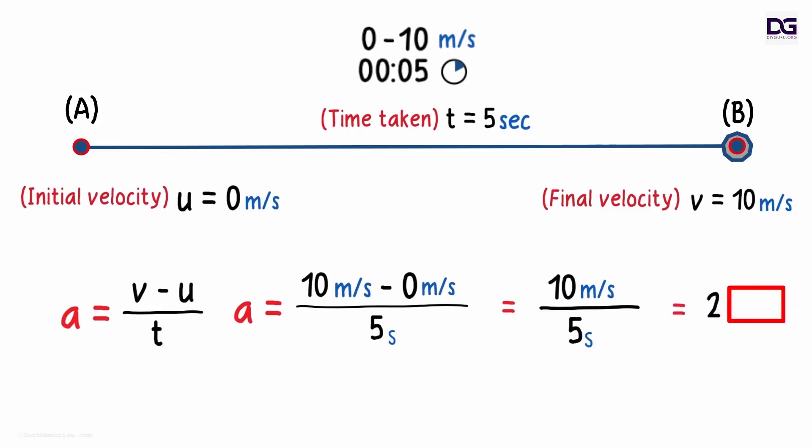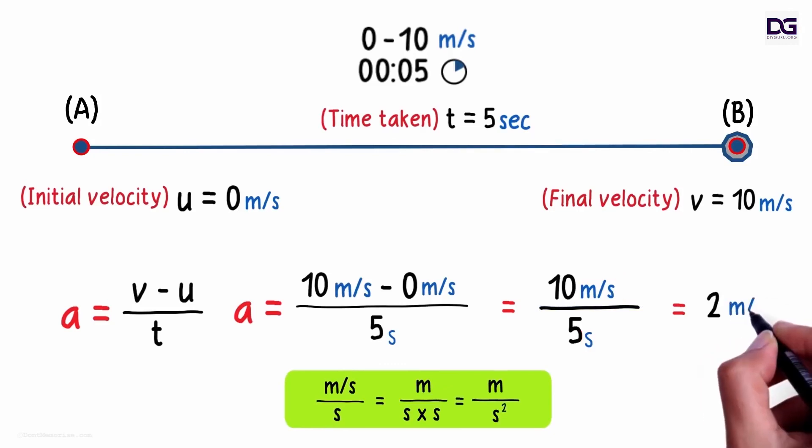Wait, hold on. What will be the units of acceleration? We should get a hint by looking at this. The units of acceleration will be meters per second per second because it's the change in velocity over the time taken. As this is meters per second, we can carry this second to the denominator and what we will get is meters per second squared. This one is more intuitive, but this one is a bit neater, I would say.